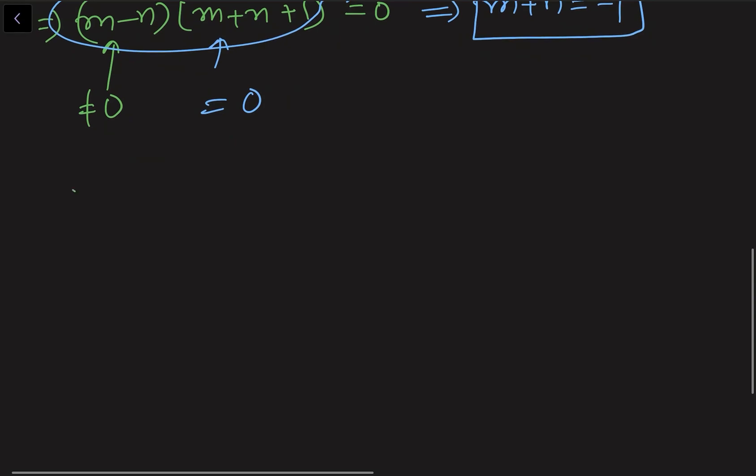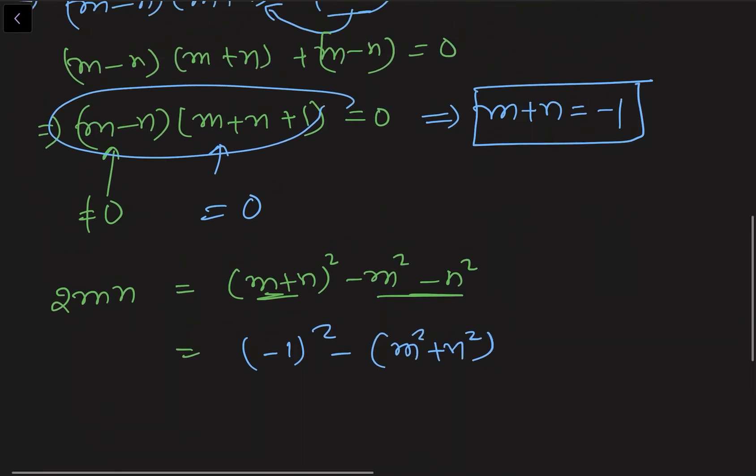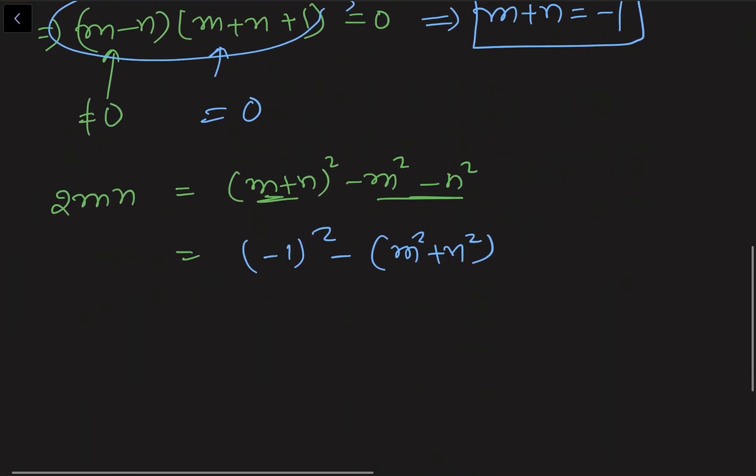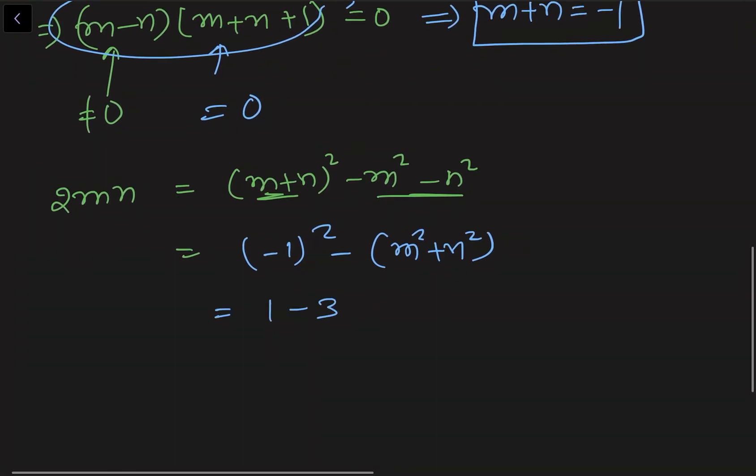Now we know that mn is what? I can write it like this: 2mn = (m + n)² - m² - n². I can say that. And we know these two values. So directly put those values. What is this m + n? -1. (-1)². Minus (m² + n²). And what is this m² + n²? It is 3. So what we are getting is 1 - 3, that is -2. So which gives us mn = -1. Now all the three things sorted out. We just need to put the values.